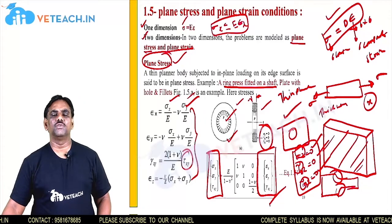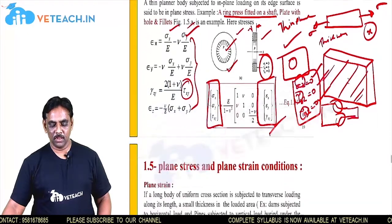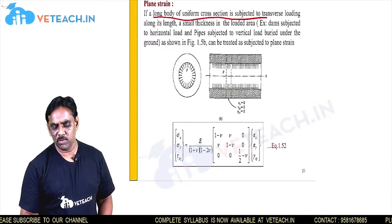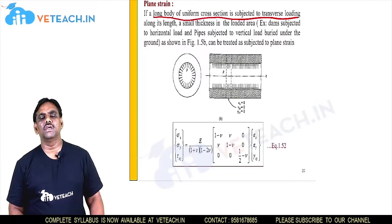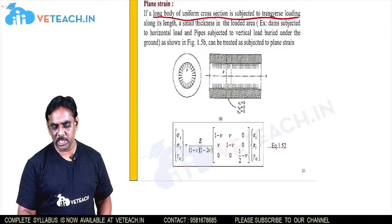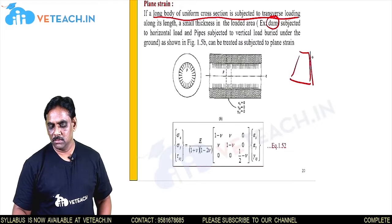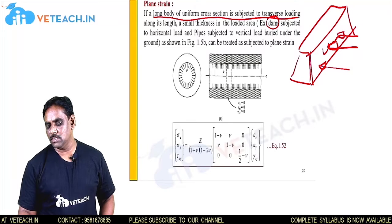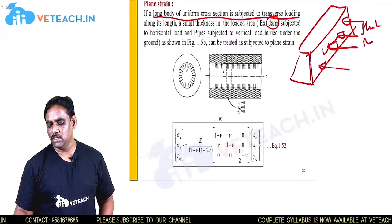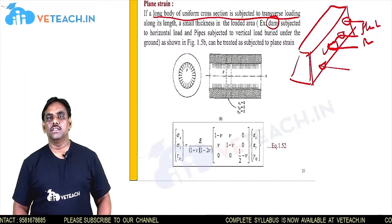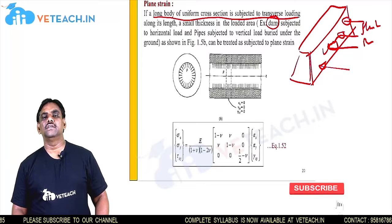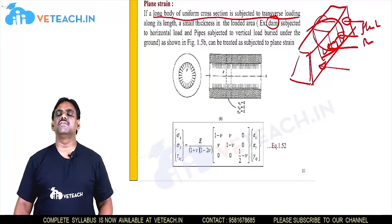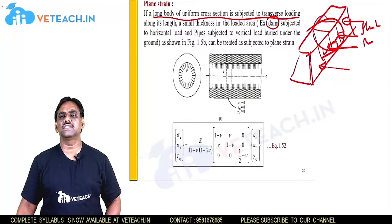Now we will discuss another case for two-dimensional analysis: plane strain. Plane strain is when we consider a long body of uniform cross section subjected to a transverse load along the length direction. For example, consider a dam — it is a longer member. If it is subjected to forces due to water or fluid pressure — the fluid pressure along the horizontal direction — the length of the member is very long compared to the cross section. If you take any portion of the section, the strain will be 0 as the member is very, very long along the length direction.